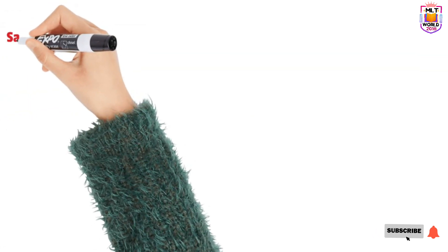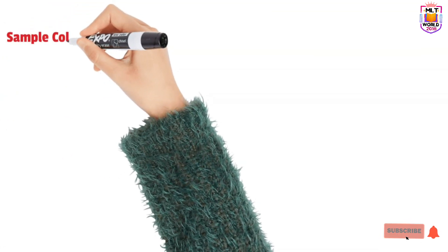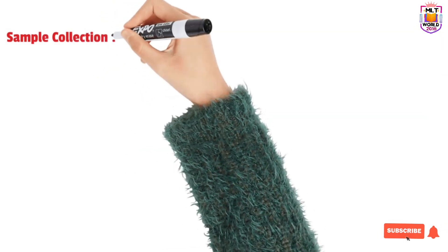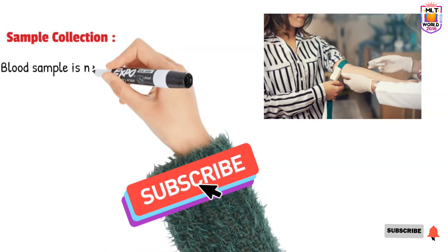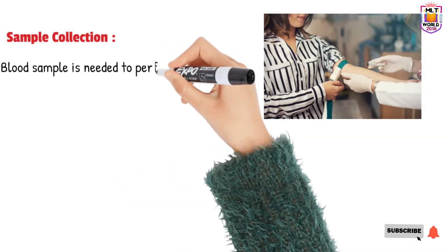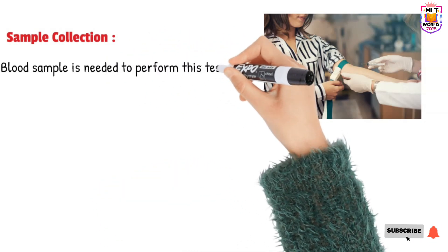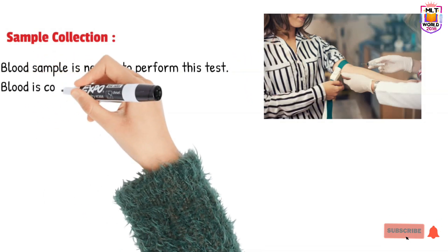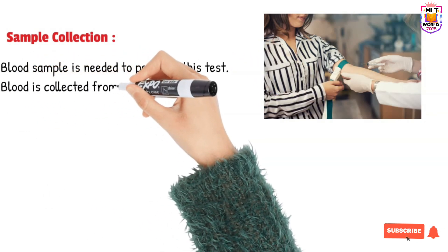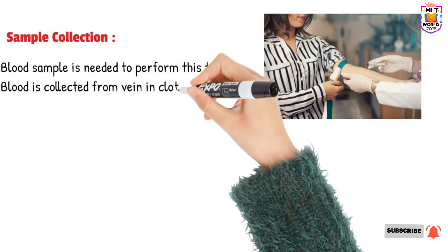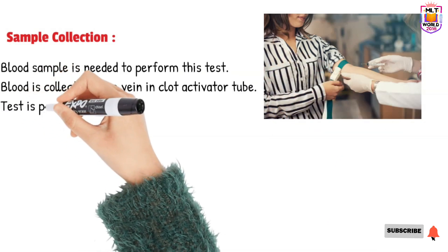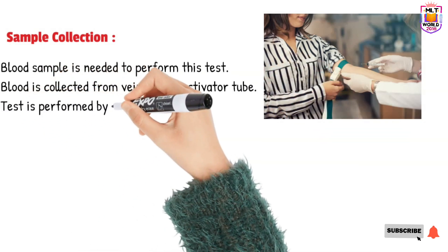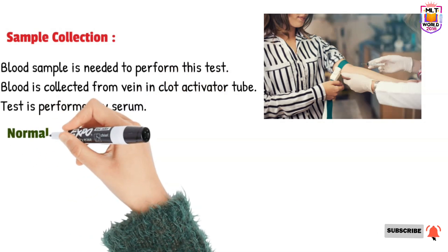Bilirubin is a simple test to perform. Blood is required and is collected from the vein of the patient. The blood is collected in a clot activator tube, which is either red or yellow in color. After that, the lab separates the serum using a centrifuge, and from the serum we perform this test in the laboratory.